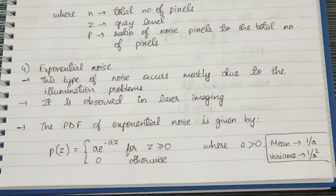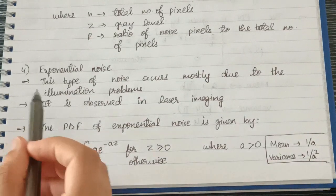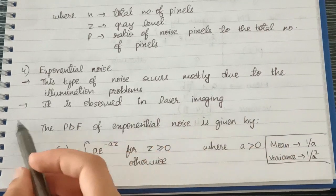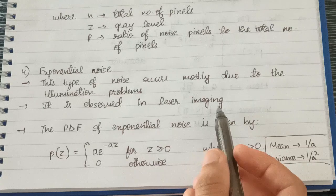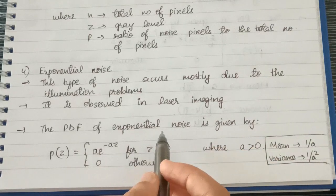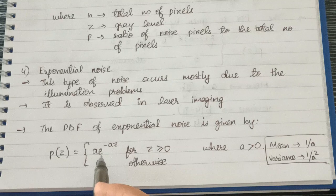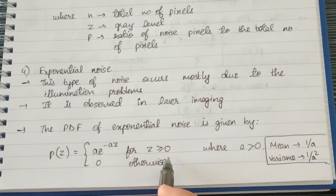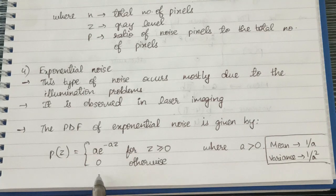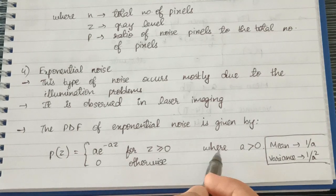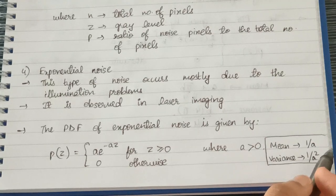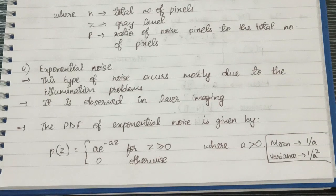Next is exponential noise. This type of noise occurs mostly due to illumination problems and is observed in laser imaging. The PDF is: p(z) = a · e^(−az) for z ≥ 0, and 0 otherwise, where a > 0. The mean is 1/a and the variance is 1/a².